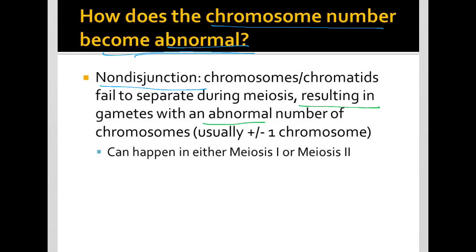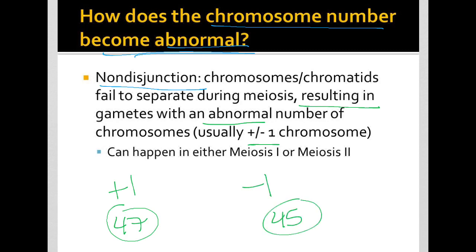In the case of humans, this will usually be plus or minus 1 chromosome. If you are plus 1 chromosome, then you actually have a total of 47 chromosomes as opposed to 46. If you're minus 1, you would have 45 chromosomes as opposed to 46.